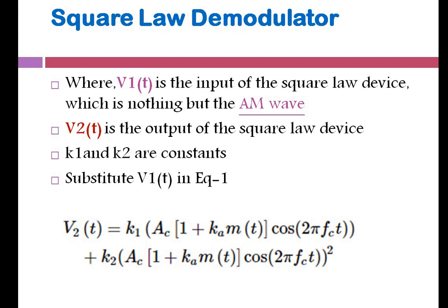Now we substitute the value of V1(t) — that is the amplitude modulated signal — into the equation. V2(t) = K1·Ac(1 + Ka·m(t))·cos(2πfc·t) for the first term, plus K2 into [Ac(1 + Ka·m(t))·cos(2πfc·t)]² for the second term. The AM wave is given as input to the square law device, and this substitution is very important. Please listen carefully to understand this process.